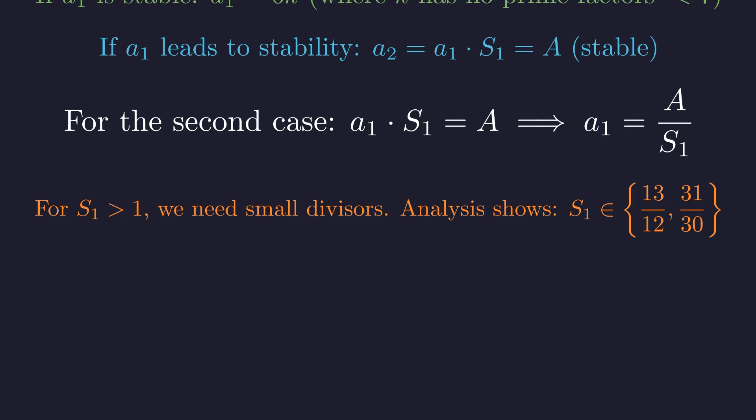We previously found the two cases where S1 is greater than 1. The first is when the divisors are 2, 3, and 4, giving S1 equals 13/12. The second is when the divisors are 2, 3, and 5, giving S1 equals 31/30.